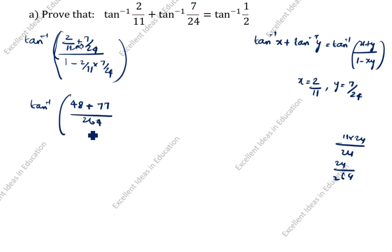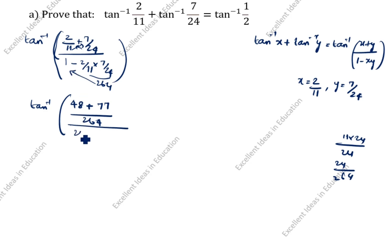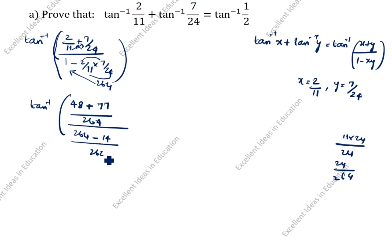So we get 264 divided by — and similarly the denominator is also 264. Then 264 into 1 is 264 minus 7 into 2 is 14, divided by 264.